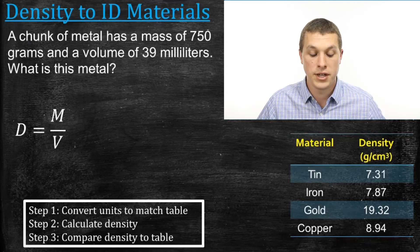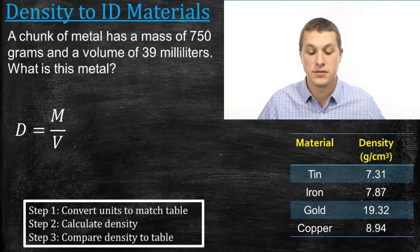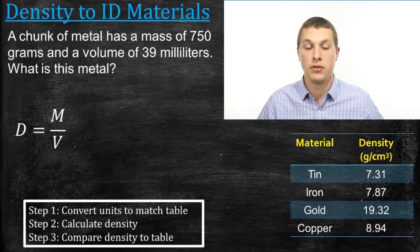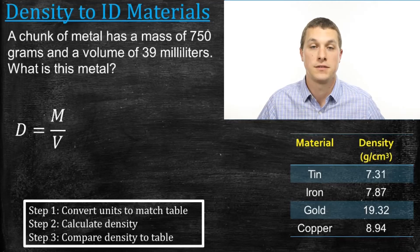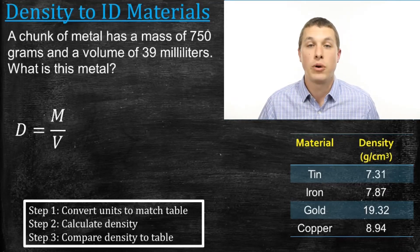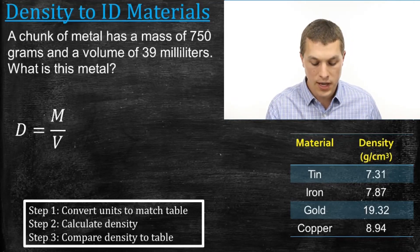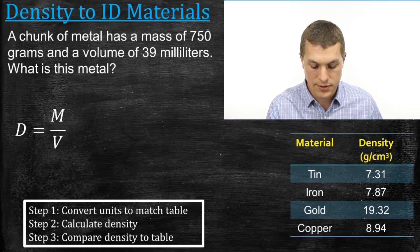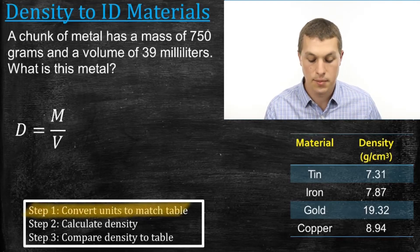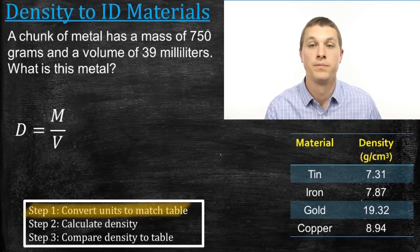So this problem reads: a chunk of metal has a mass of 750 grams and a volume of 39 milliliters. And it asks us, what is the metal? I've broken down this process into three steps. And the very first step says: convert units to match the table.